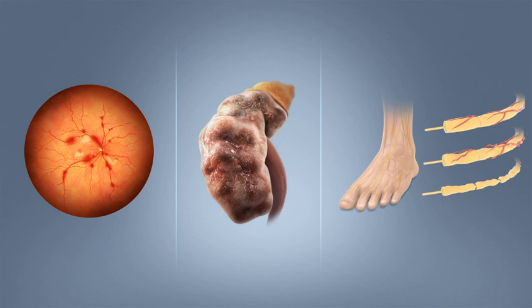The word mellitus comes from the classical Latin word mellitus, meaning sweetened with honey, honey sweet. The Latin word comes from mel, meaning honey, sweetness, pleasant thing, and the suffix -itus, whose meaning is the same as that of the English suffix -ite. It was Thomas Willis who in 1675 added mellitus to the word diabetes as a designation for the disease, when he noticed the urine of a diabetic had a sweet taste, glycosuria. This sweet taste had been noticed in urine by the ancient Greeks, Chinese, Egyptians, Indians, and Persians.